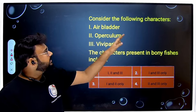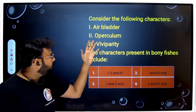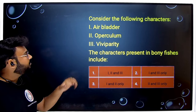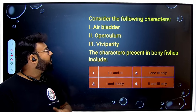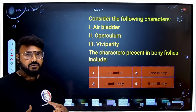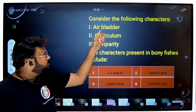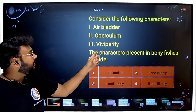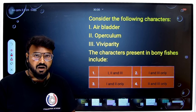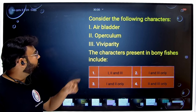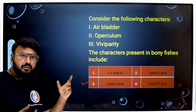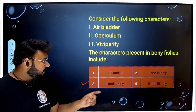In the next question they are asking: consider the following characters — air bladder, operculum, and viviparity — and asking which characters are present in bony fishes. Operculum is basically a covering of the gills, and the air bladder helps in buoyancy in bony fishes. So these two features are present in bony fishes, but they are not viviparous. Viviparous means able to give birth to young ones. So the answer has to be option one and two, which is option number three.